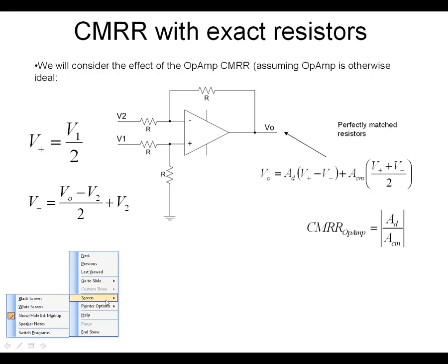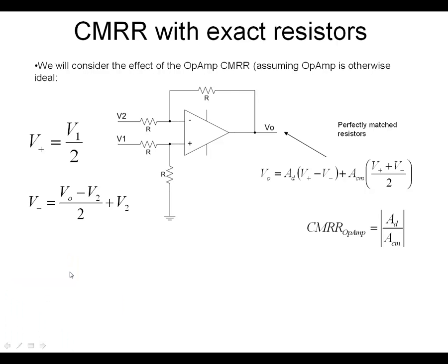So if we put all those together and figure out what we're doing inside our equation, we can now write out Vout. Vout is equal to the differential mode gain, so we want to find out what V1 minus V2 is. Here we have our V1, here we have our V2, and here we have our V+ and V-.